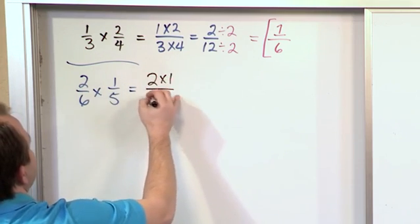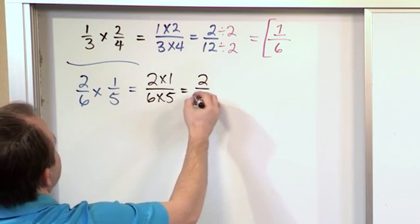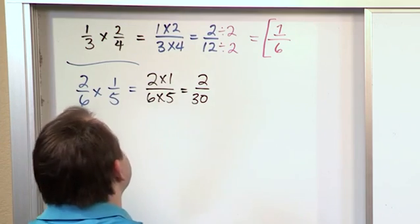2 times 1 on the top, 6 times 5 on the bottom. 2 times 1 gives me 2. 6 times 5 gives me 30. So that's basically the answer, but I want to try to simplify it.